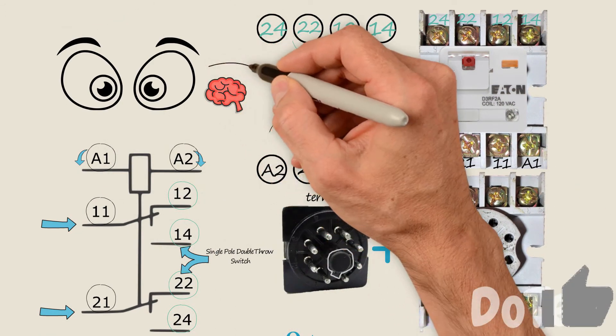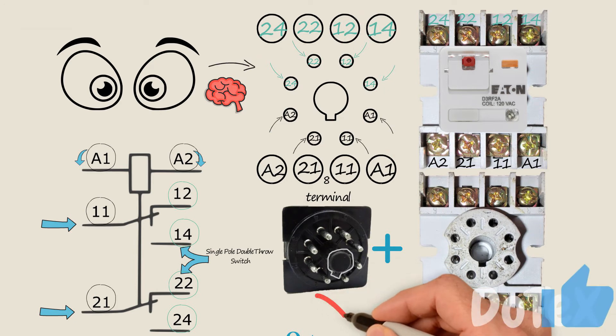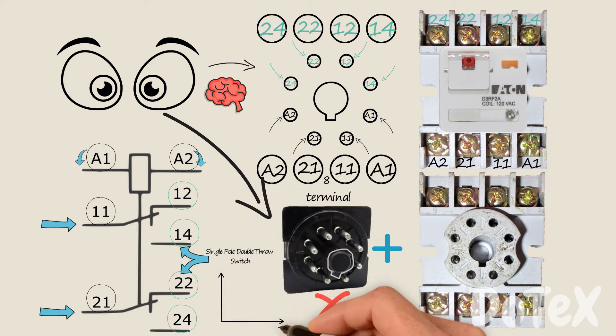Again, keep in mind we are looking at the base, not the bottom of the relay. If you look at the bottom of the relay, you have to do a 180-degree switch on the vertical axis. All right, now let's find out where is the short circuit.